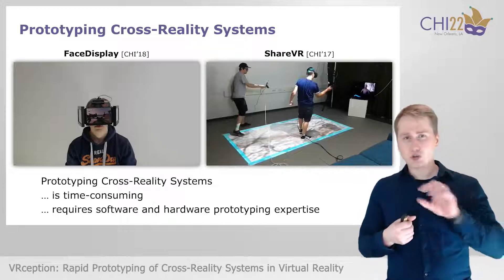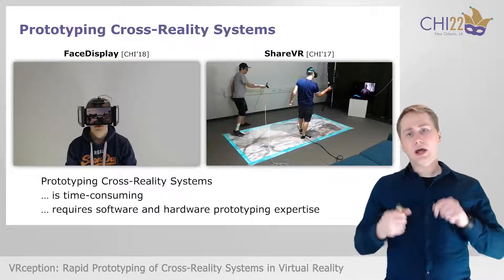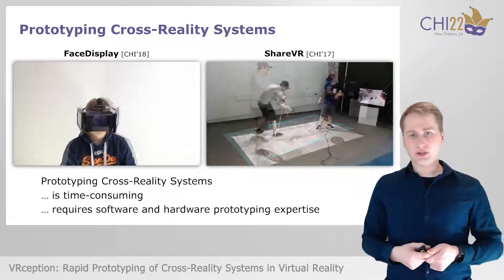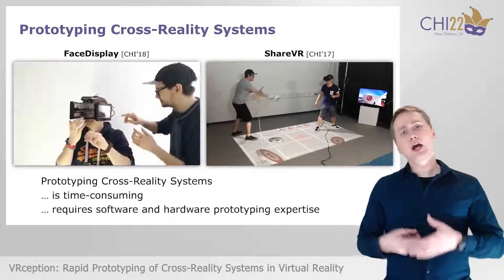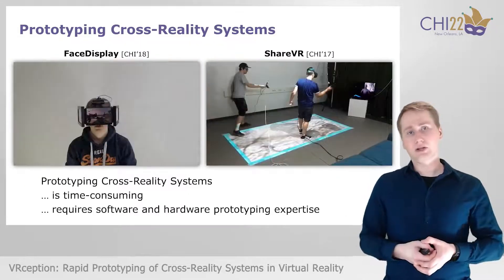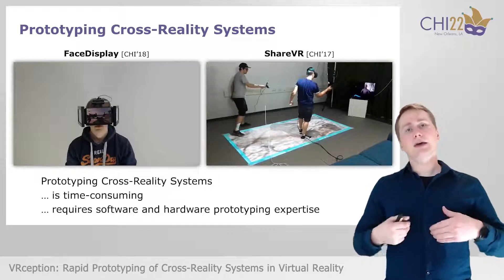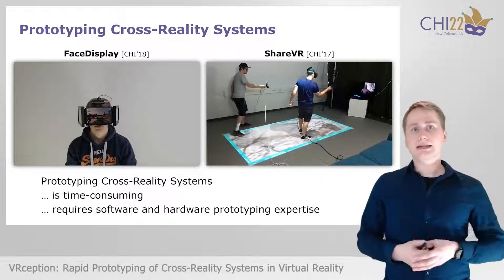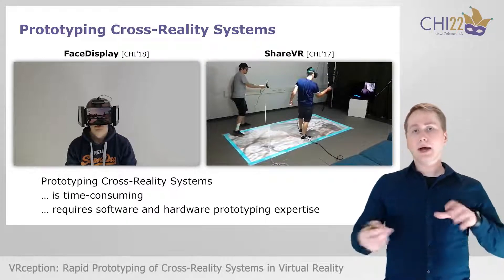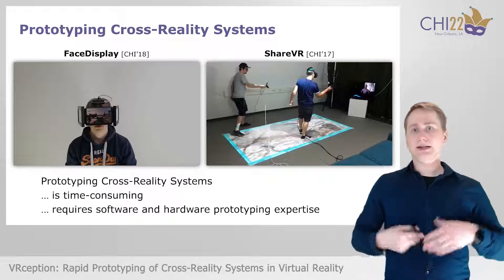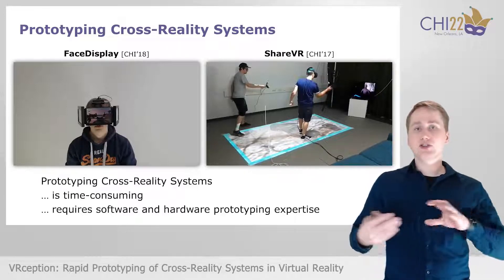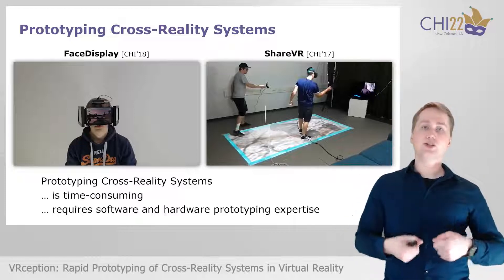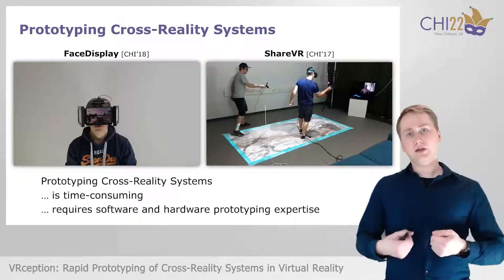Two examples of the latter are shown here, in which a bystander can interact with a VR user. On one side, we have FaceDisplay; on the other side, we have ShareVR. The basic idea is that we want to bridge the gap introduced by the virtual reality head-mounted display by employing additional displays and projections that allow bystanders to see what's going on and give opportunities for bystanders to engage in the VR experience.